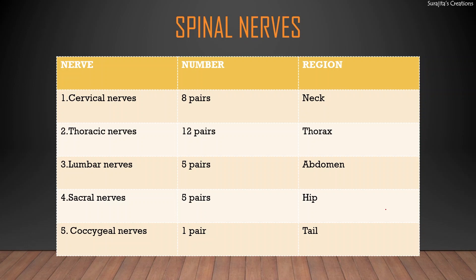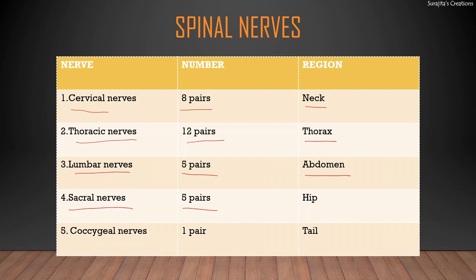Spinal nerves are related to the spinal cord. There are 31 pairs of spinal nerves, named according to the region of the spinal cord they are present in. Those in the neck region are called cervical nerves, and there are 8 pairs. Thoracic spinal nerves are 12 pairs, present in the chest region. Lumbar nerves are 5 pairs, present in the abdomen below the diaphragm. Sacral nerves are 5 pairs, present in the hip region. Coccygeal nerves are 1 pair, present in the tail region.